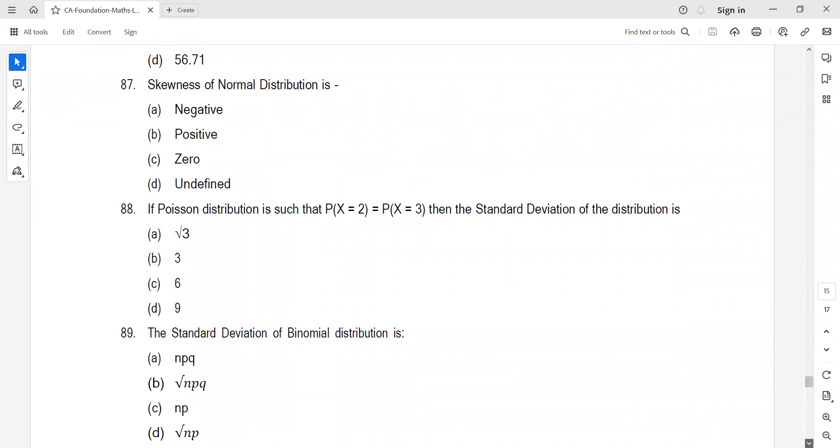Question on skewness. Skewness of normal distribution is what? Normal distribution is a symmetric distribution. If the curve is symmetric, skewness is zero. This is theory we have done.